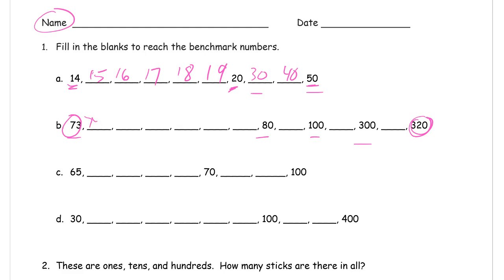So 73, 74, 75, 76, 77, 78, 79, 80. Now we're counting by tens: 90, 100.